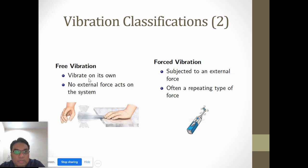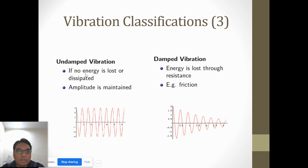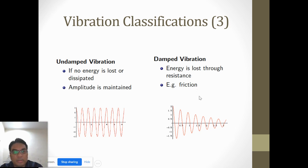For free vibration, the system vibrates on its own with no external force. For example, if you hold a ruler and release it, it vibrates freely. For forced vibration, the system is subject to an external force - like a motor that excites the structure. Anything with a motor has an excitation force. For undamped vibration, there is no energy loss and the amplitude is maintained. For damped vibration, energy is lost through resistance such as friction, and the vibration reduces over time.